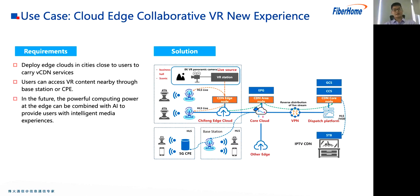The next edge computing application scenario is a new VR experience provided by edge cloud collaboration. We deploy edge cloud in areas close to users, install 8K VR panoramic cameras in business halls or scenic spots, and upload the content to the edge cloud after processing by the VR stitching workstation. VR content can then be obtained nearby to achieve lower latency and a better user experience. In the future, we can use powerful edge computing capabilities combined with AI to provide intelligent media experiences such as free perspective and emotional perception.